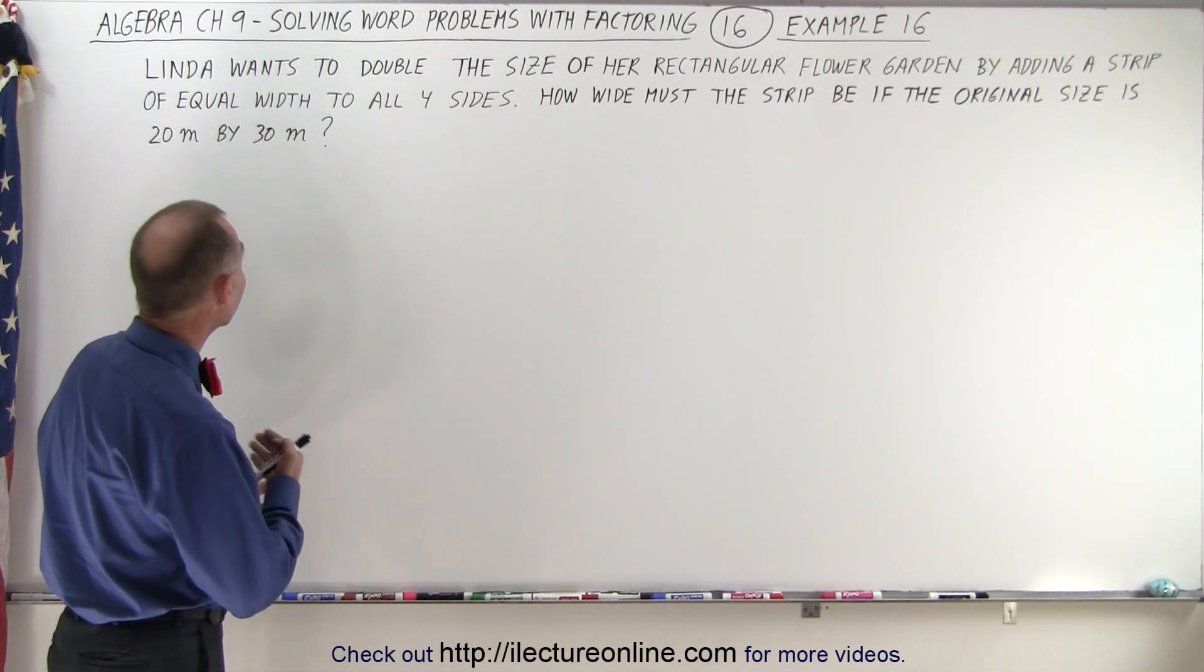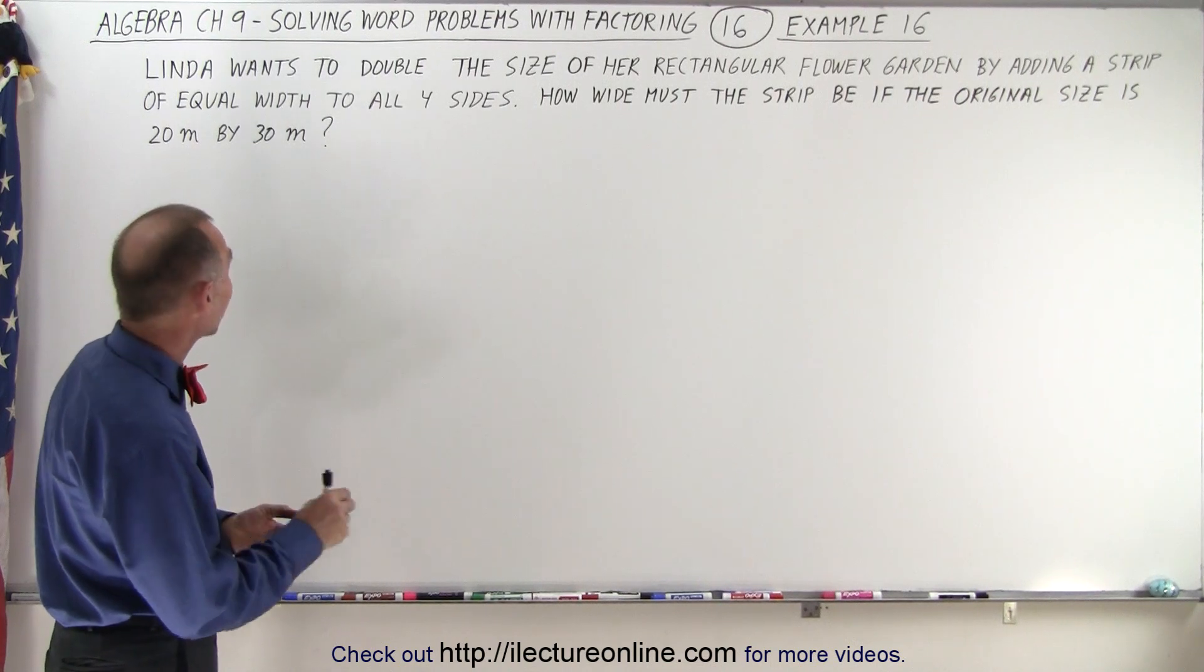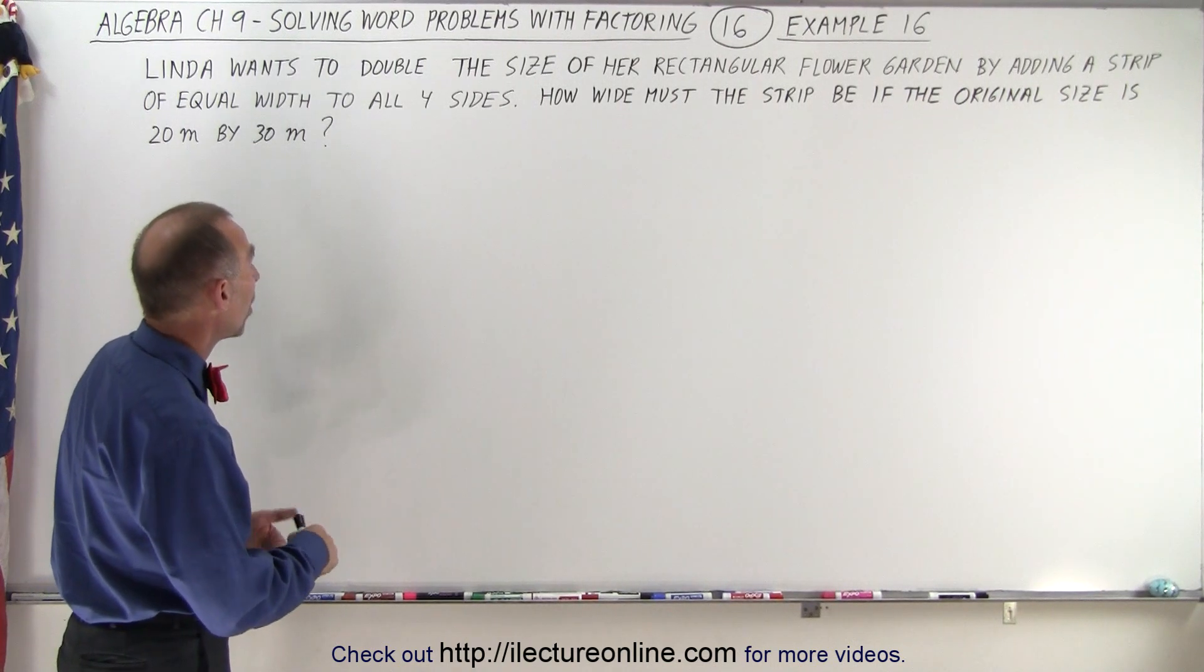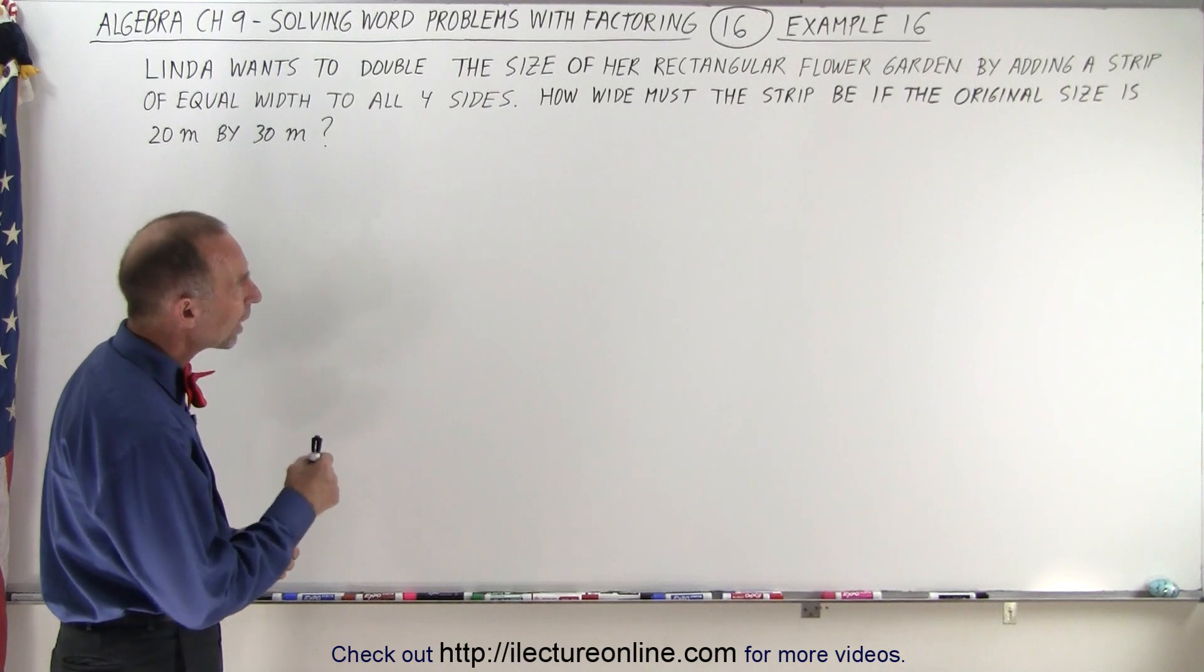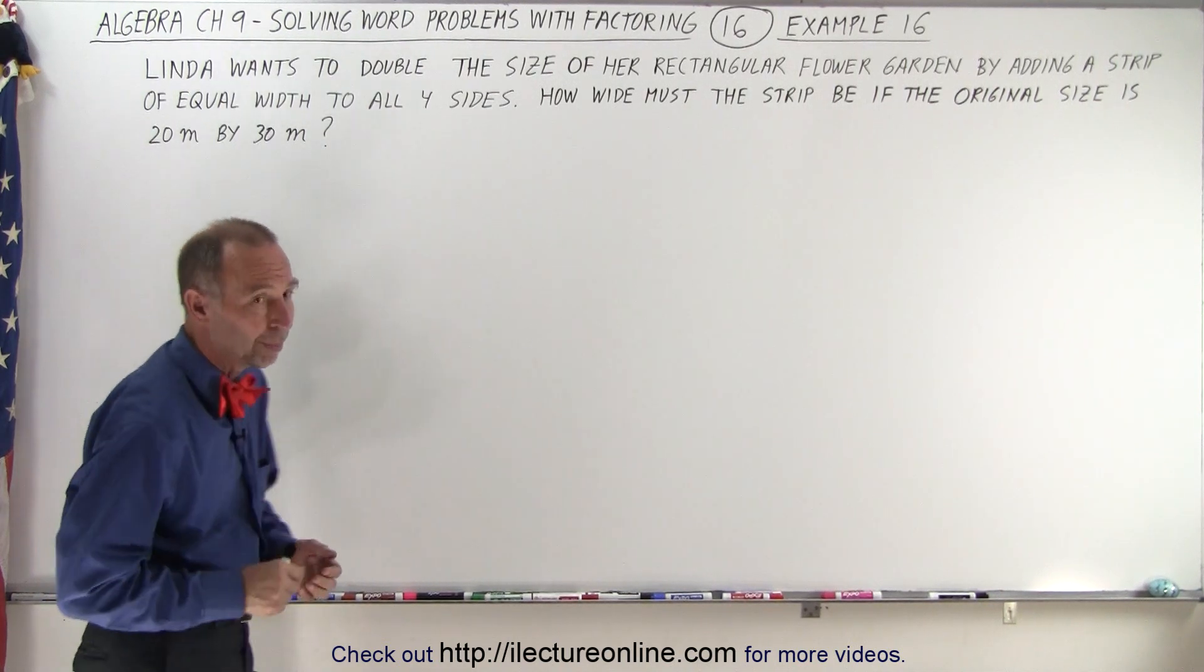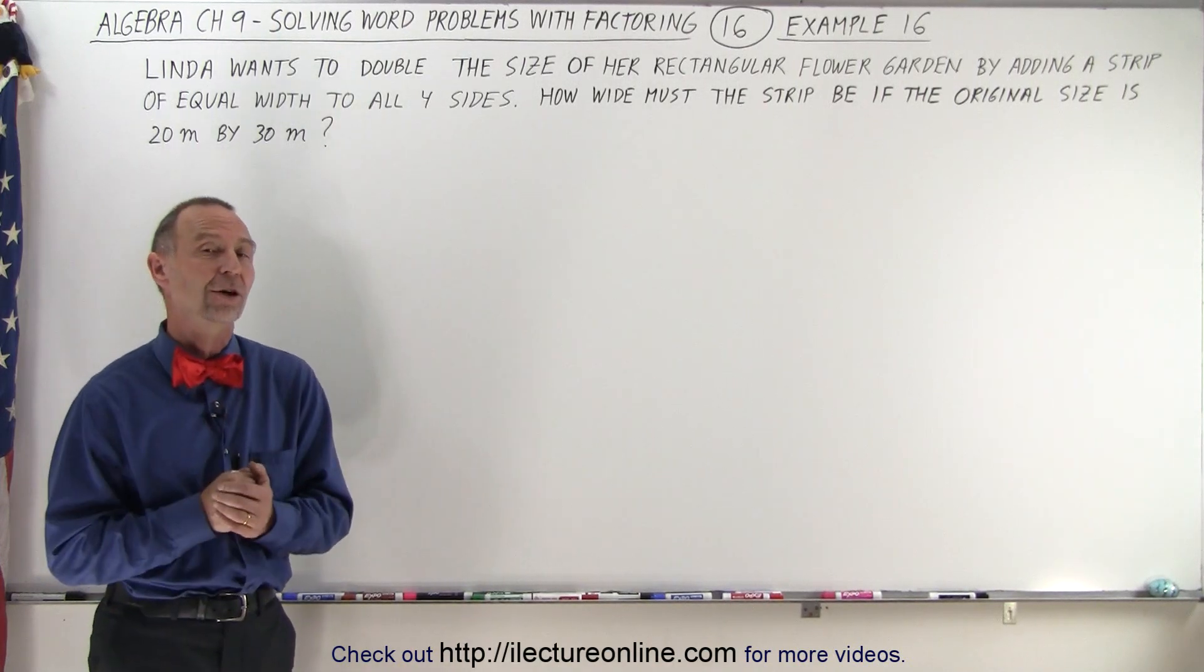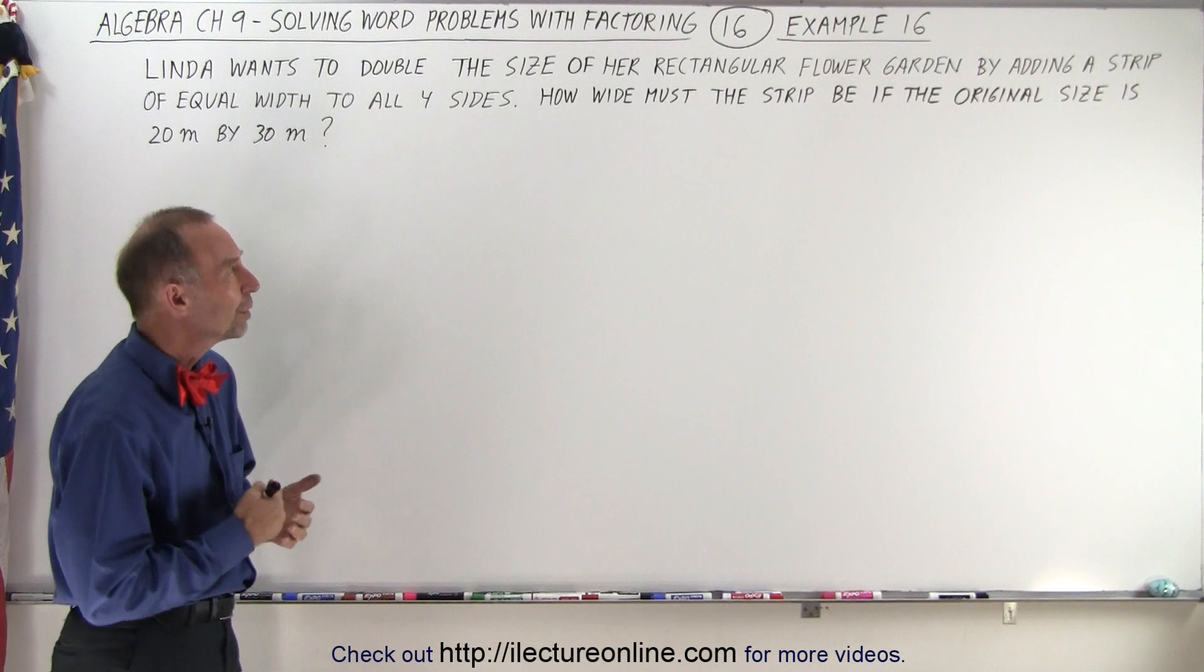It says here that Linda wants to double the size of a rectangular flower garden by adding a strip of equal width to all four sides. How wide must the strip be if the original size is 20 meters by 30 meters? That's a large flower garden but she wants to make it larger. How do we do this problem?